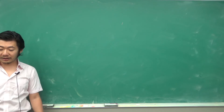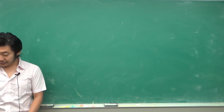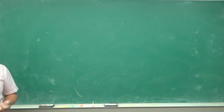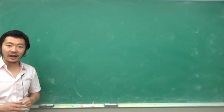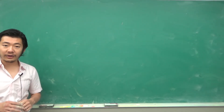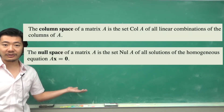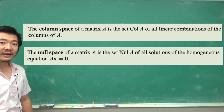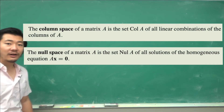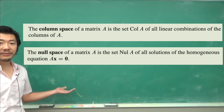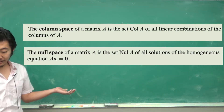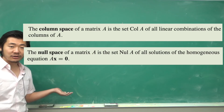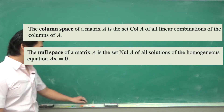Subspaces are also useful when you want to describe certain sets. Two that come up often are the column space and the null space. The column space is the set of all linear combinations of the columns of A, and the null space is the set of all solutions to the homogeneous equation.